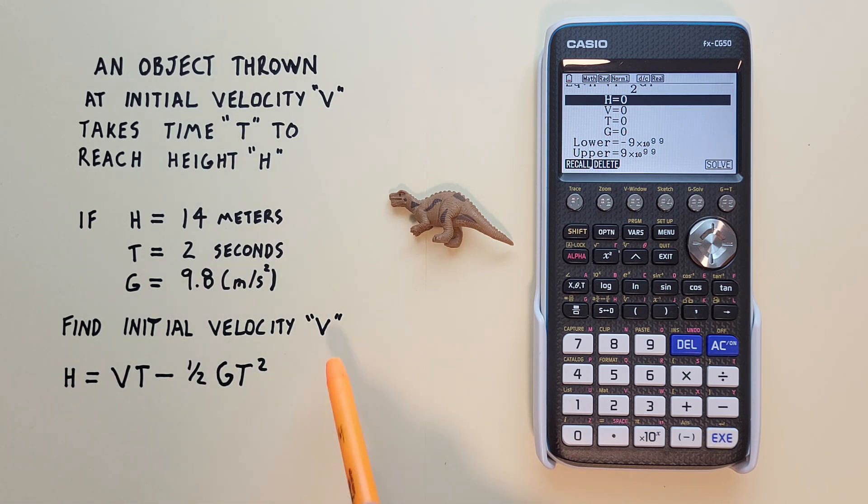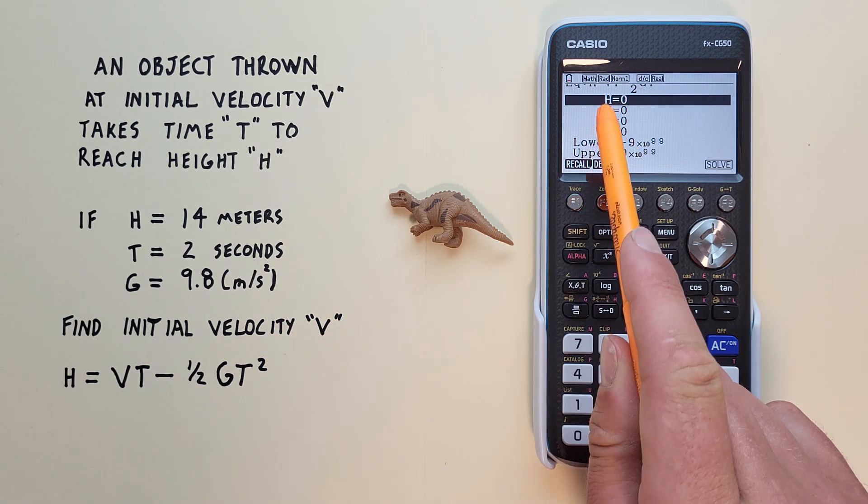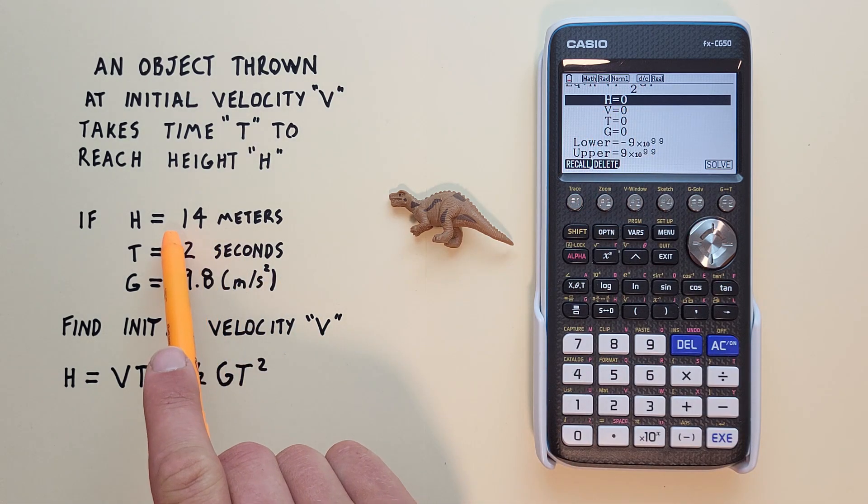Now we can enter our variables. We're trying to find V, so that's the one we'll leave blank. First is H. That was 14 meters.